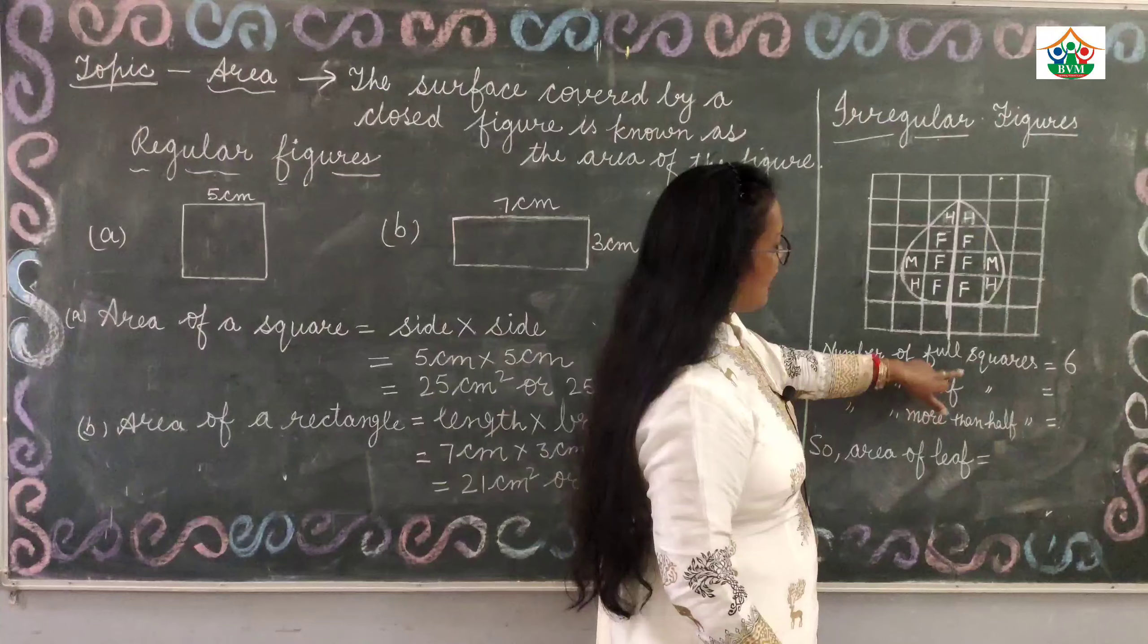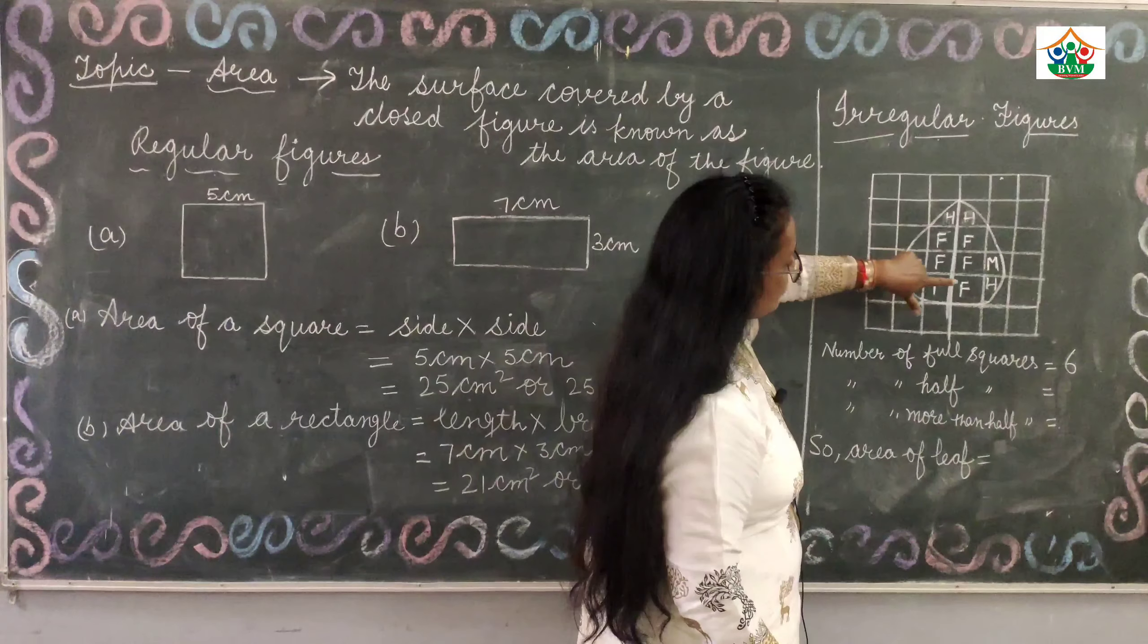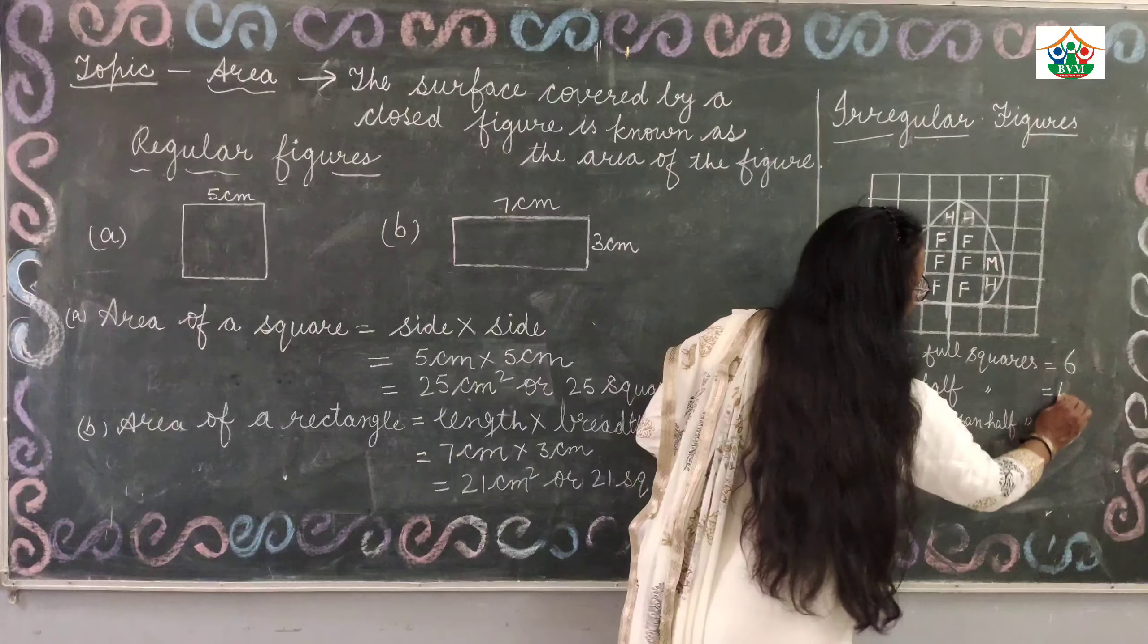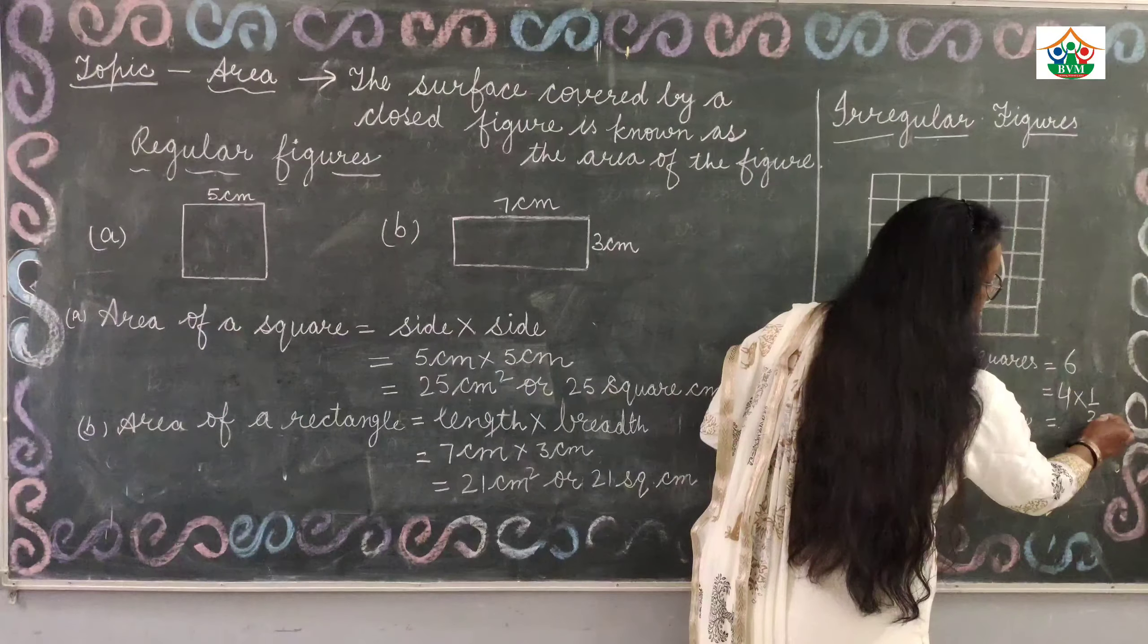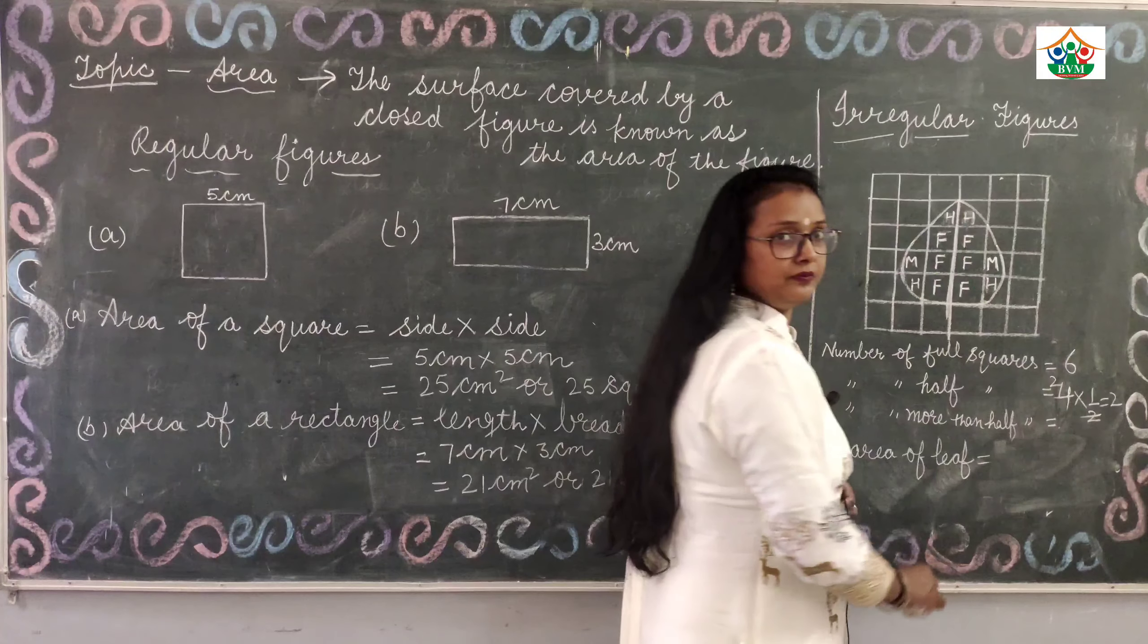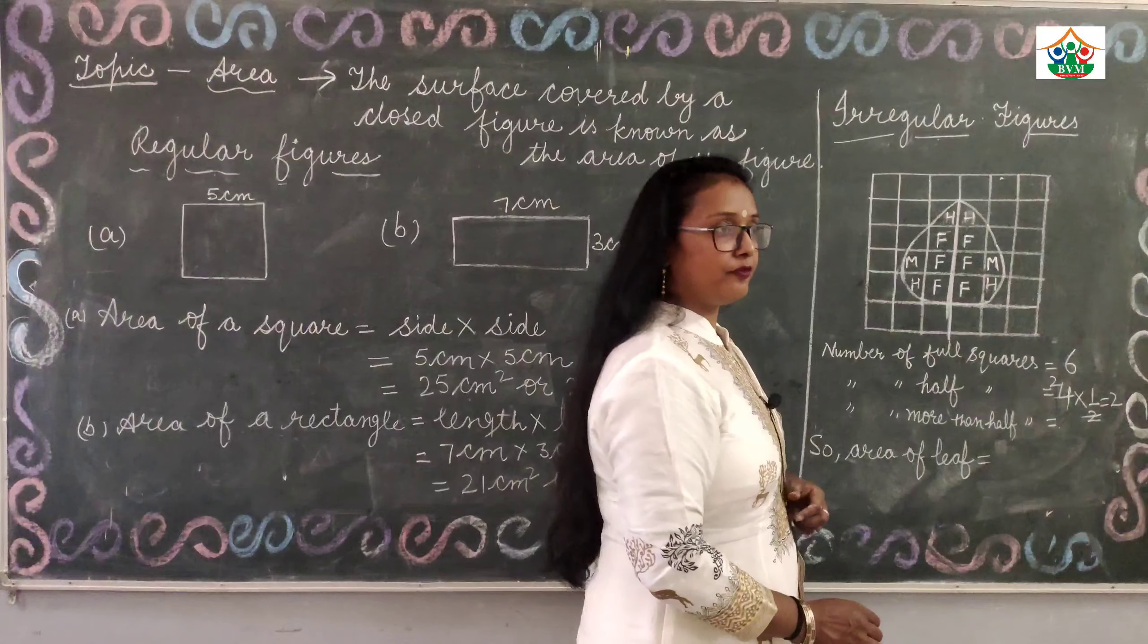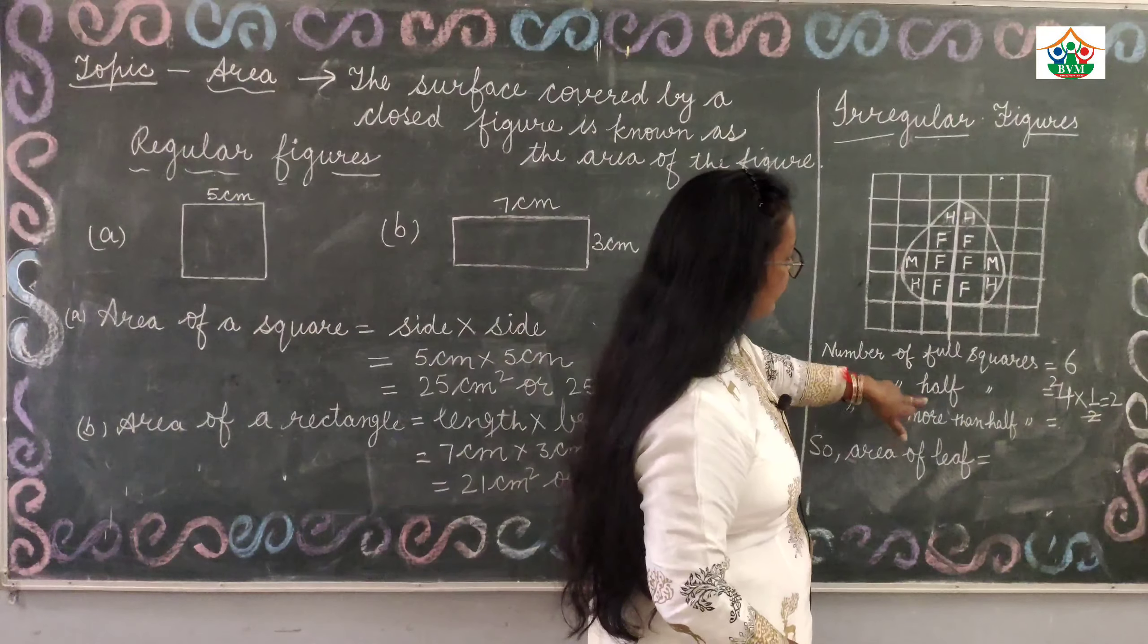After that, number of half squares. Half: 1, 2, 3, 4. Four half squares. How many are full here? Four multiply 1 by 2 equals 2 full squares. Four half squares equal 2 full squares.